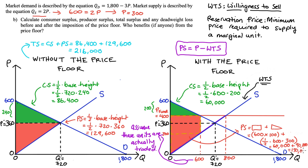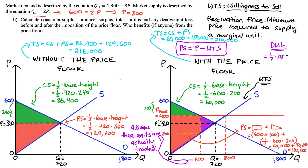Total surplus with the price floor is CS + PS = 60,000 + 150,000 = 210,000. Deadweight loss is the purple triangle: DWL = ½ × base × height = ½ × (400 − 300) × (720 − 600) = ½ × 100 × 120 = 6,000. We can verify: total surplus fell from 216,000 to 210,000, a difference of exactly 6,000 — matching our deadweight loss calculation.